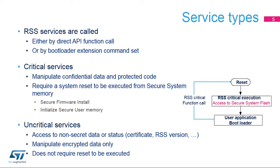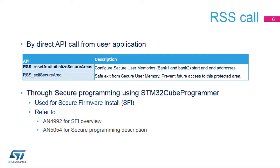RSS services can be called either by direct application programming interface or API functions, or by specific bootloader commands. RSS services can be split into two kinds depending on the confidential data or code they manipulate. Critical services manipulate confidential data such as cryptographic keys or require safe execution from other processes, and a system reset is triggered before their execution. Critical RSS services include secure firmware or module install, and initialization of secure user memory and PC ROP areas removal. Uncritical services do not require access to confidential data and can be executed without any reset.